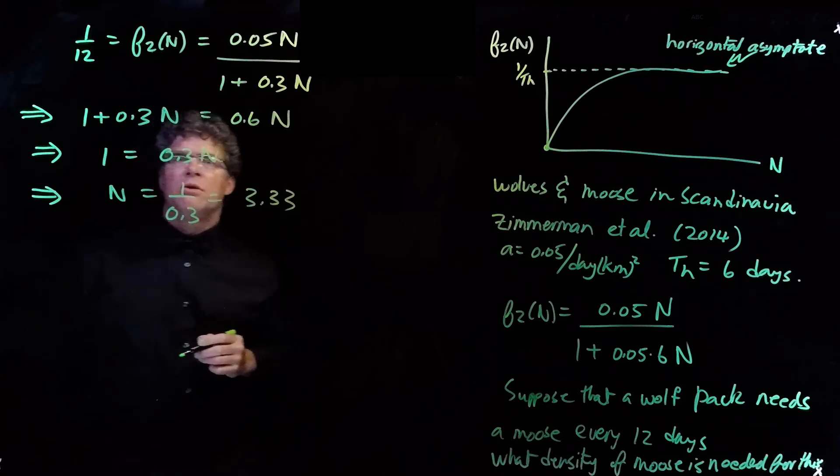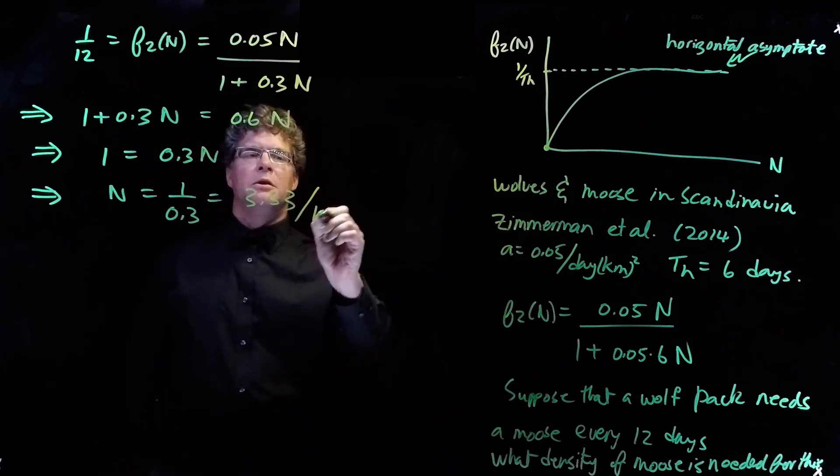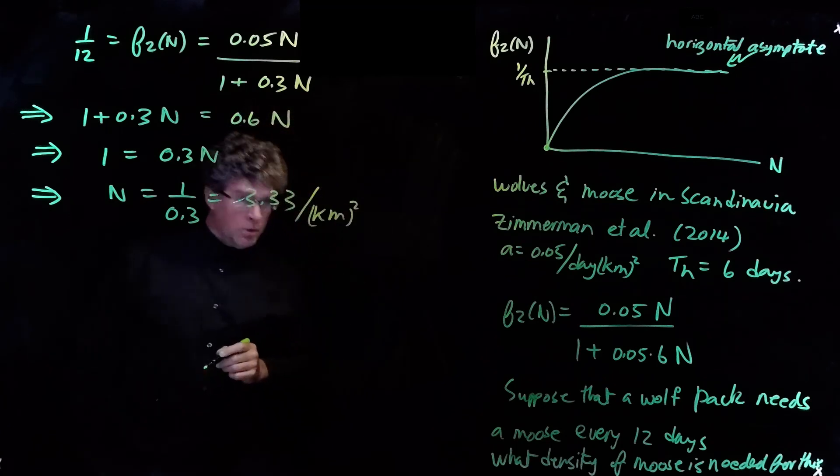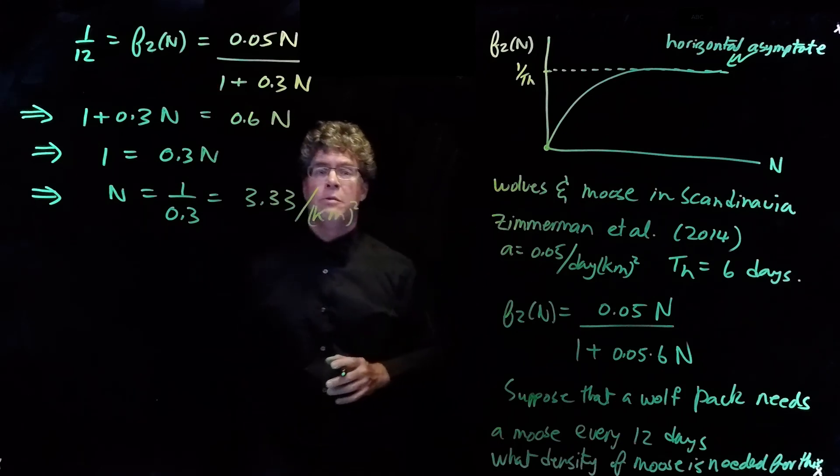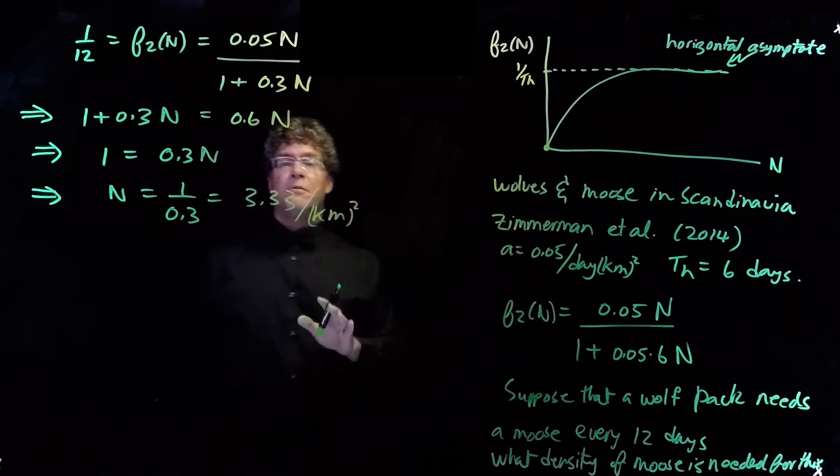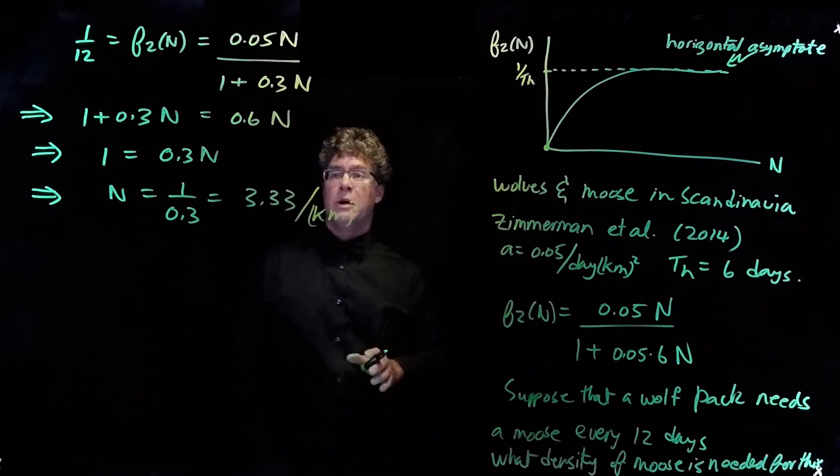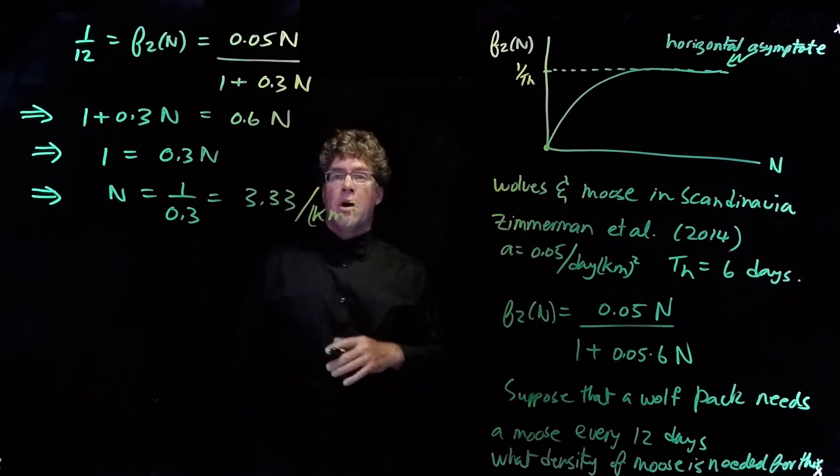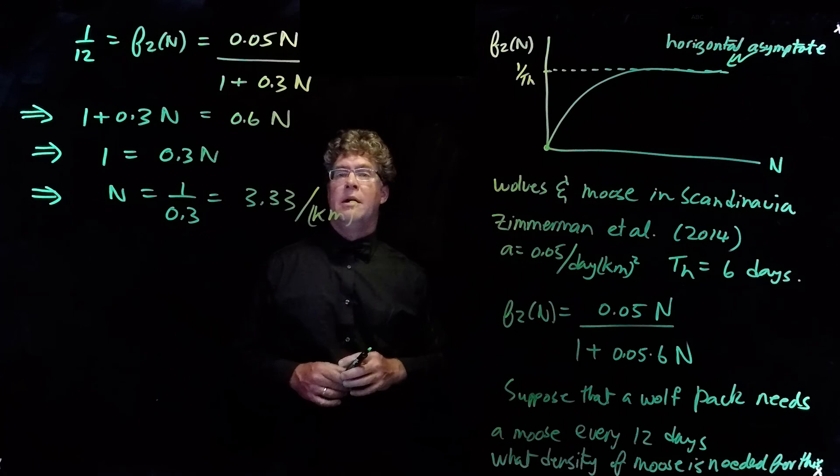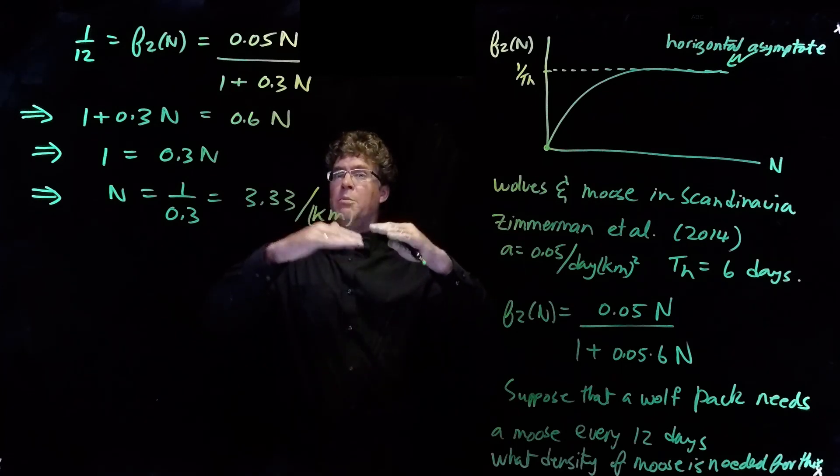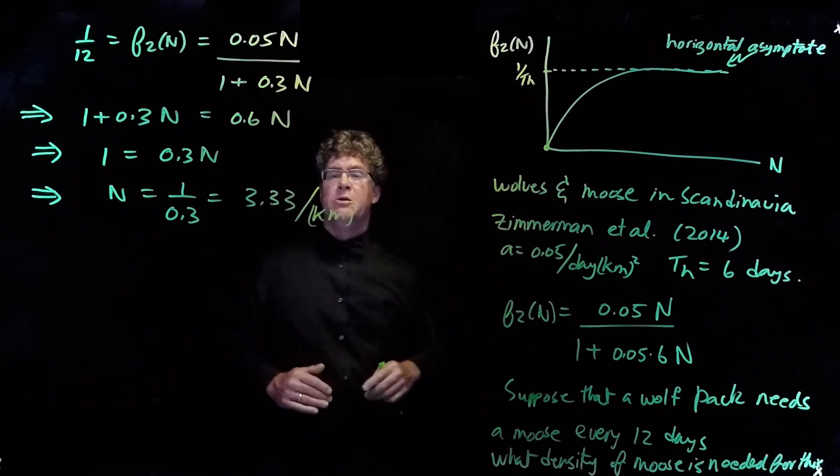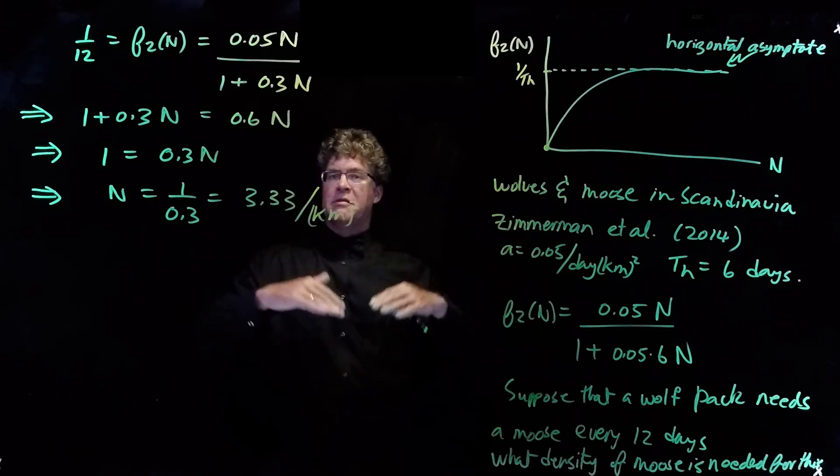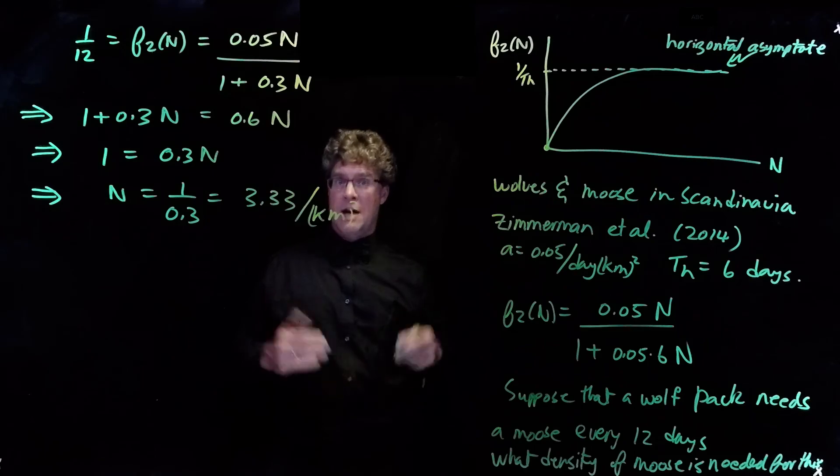And this would be 3.33 moose per kilometer squared. And so, it turns out that the density of moose in the area where this study was taken is around 5 moose per kilometer squared. And so, there are enough moose to sustain the wolf packs there. But if the moose level were to drop below about 3 moose per kilometer squared, then the wolf packs would find it difficult to get enough food.